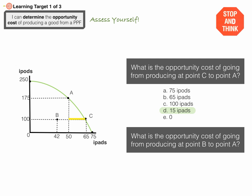Now answer this question: what's the opportunity cost of going from producing at point B to point A? Here, point B is inside the curve. Pause the video to think and answer. The answer is zero. Because at point B, this country is not utilizing all of its resources. To get from point B to point A, they could simply use resources that were not being used in order to make more iPods and more iPads — so there's nothing they have to give up in terms of iPod or iPad production.